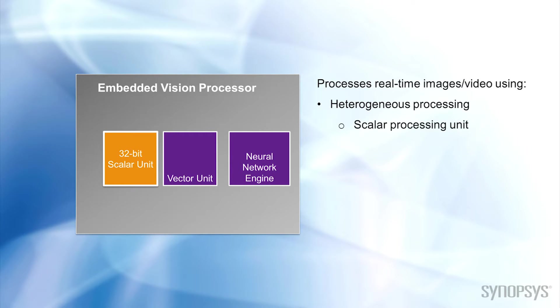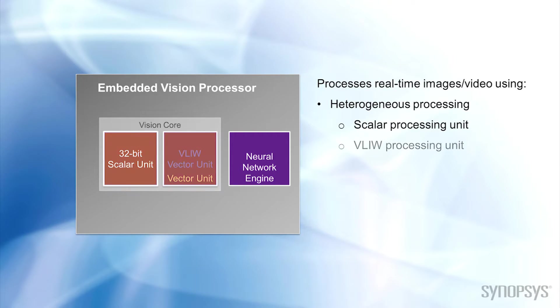Embedded vision processors typically include a 32-bit scalar unit that can handle decision-making and control tasks. These could include tasks like high-level analysis, interacting with a host processor, image stabilization, and motion tracking.